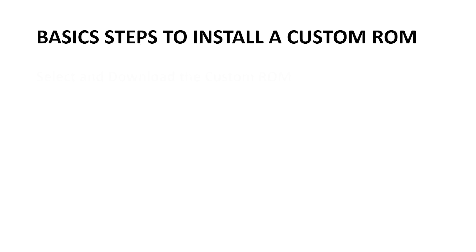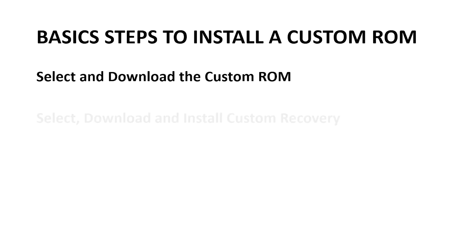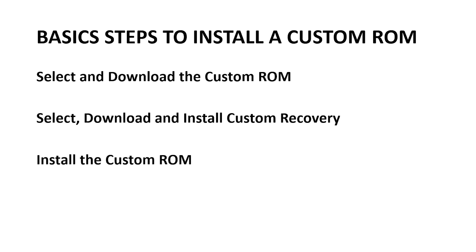As you probably have seen from the title of this video, I'm going to show you all the steps you should take to properly install a custom ROM on your Android device. To install the custom ROM, you have, in summary, three steps: select and download the custom ROM, select, download and install the custom recovery, and install the custom ROM.